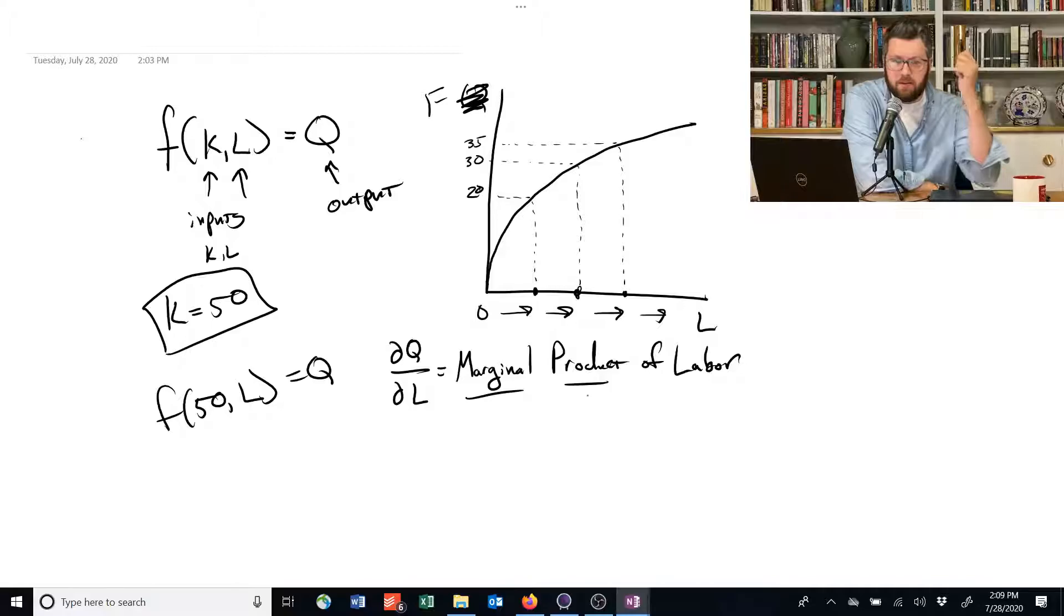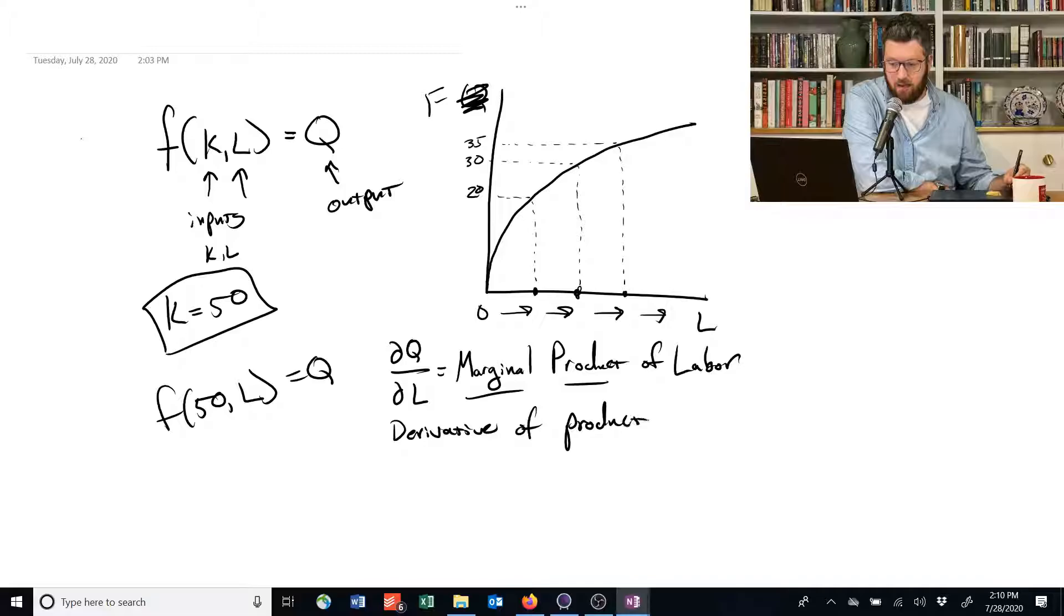That word marginal comes up a lot in economics. It means kind of like at the margin, a small amount. If we're making a small change in labor, what's the small change or large change in output that results? It's the derivative of the production function, which is this guy here, with respect to labor.